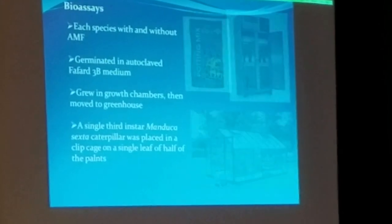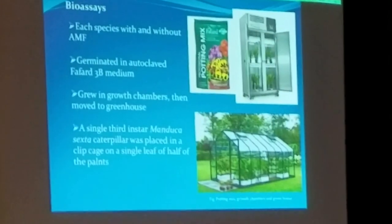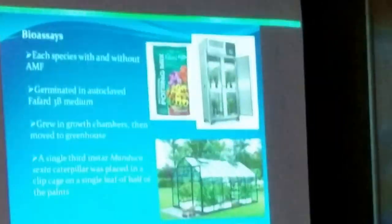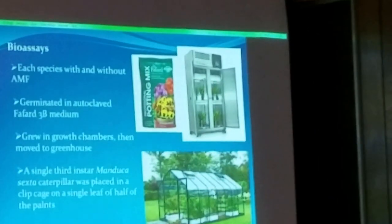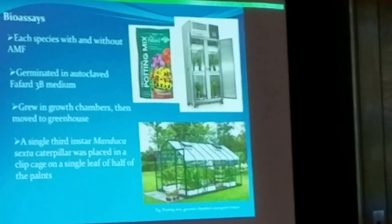The bioassay: I grew the plants first in a growth chamber, then transferred them to a greenhouse. I autoclaved all the soil to make sure there were no organisms present in it. Then I introduced the spores of the fungus into the soil and the fungus proliferated very rapidly. After one month, I introduced the caterpillar to do damage to these plants.